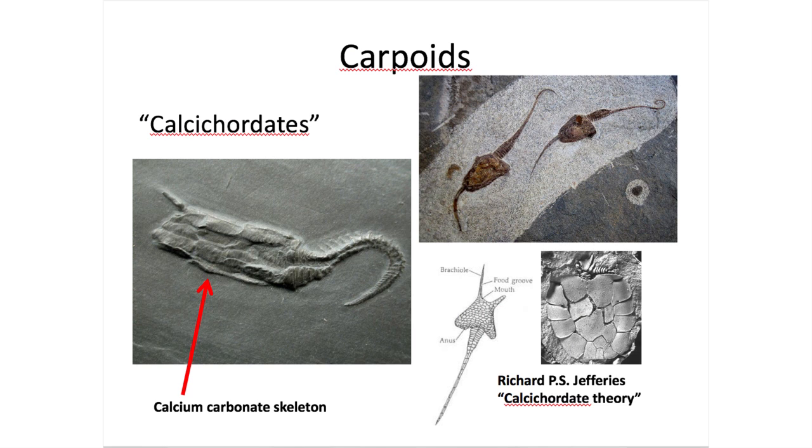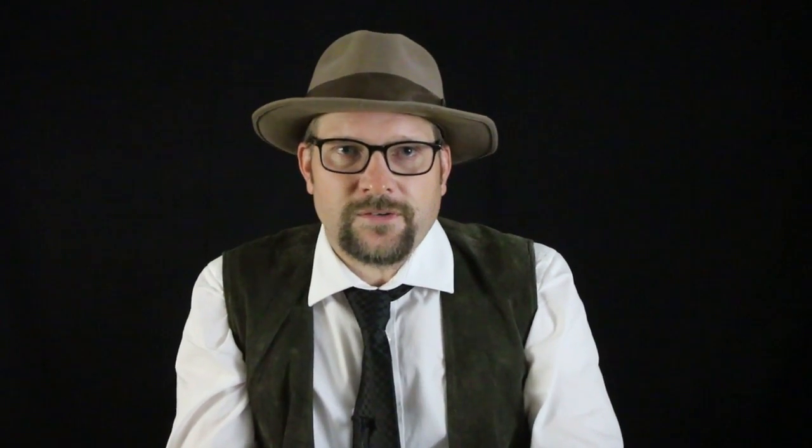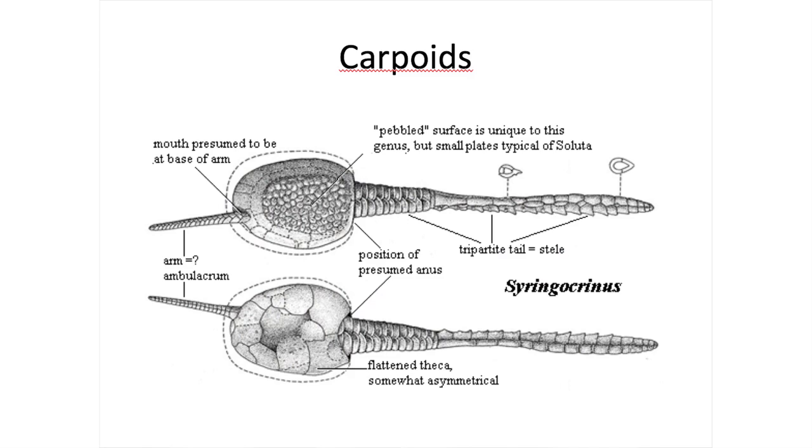However, starting in the 1960s, a paleontologist named Richard P.S. Jeffries suggested that carpoids were in fact ancestral to chordates, and grouped them together in a new group called calcichordates. Studies of trace fossils suggest that these weirdly shaped creatures lived on the muddy ocean floor, and would use their strange tail-like appendage to move through the mud, feeding on detritus. The presence of a long, movable tail suggested an affinity to early chordates.